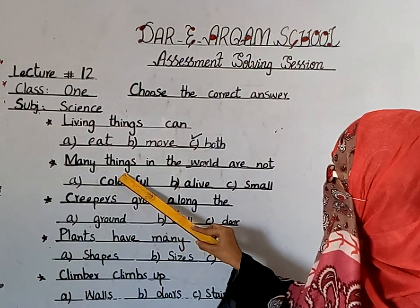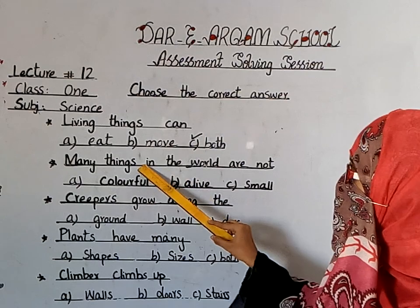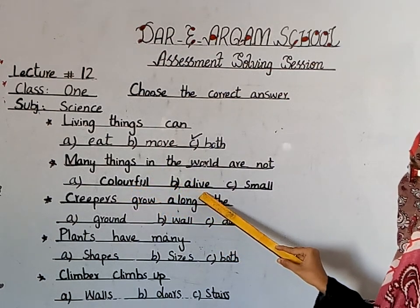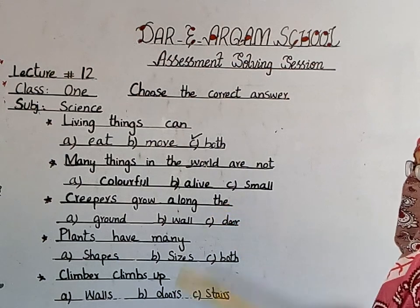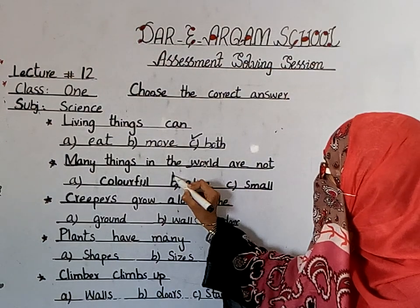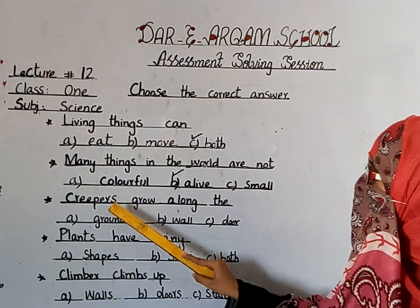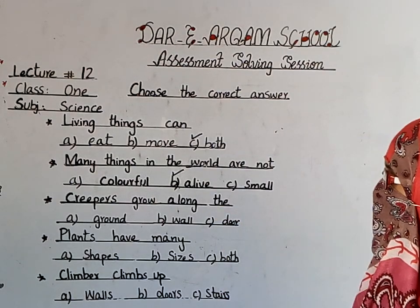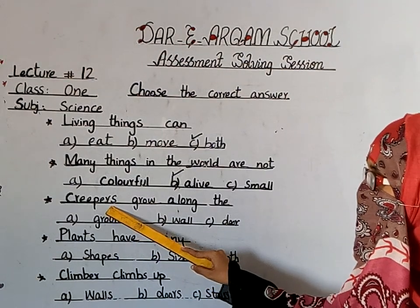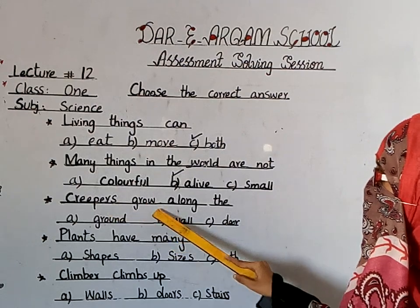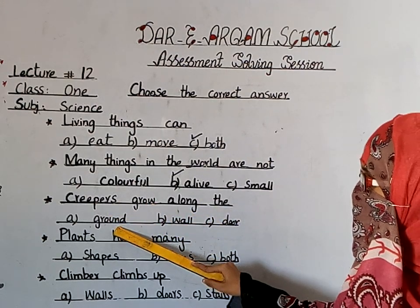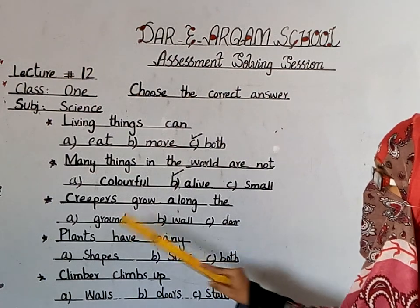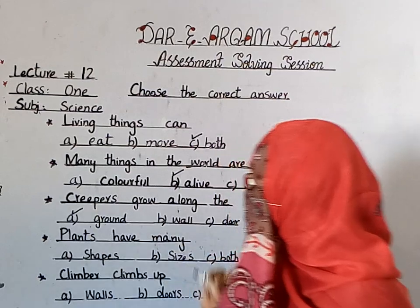Next question: Many things in the world are not living. What are they? They are non-living things. Rocks do not have life — anything that is not alive is a non-living thing.